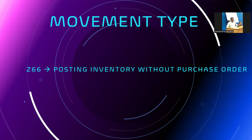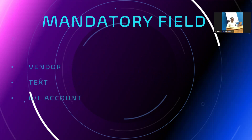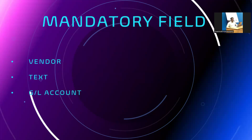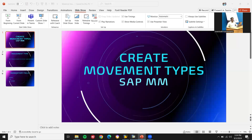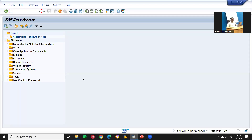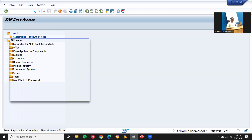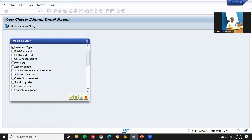We have to create it, and the mandatory field for the movement type — text is a mandatory field. We have to create a GL account also. Now let's go directly to the subject: go to OMJJ transaction. OMJJ transaction — movement type.